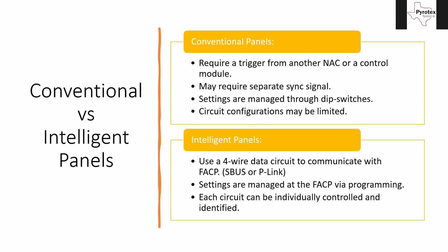Each circuit can be set up to be auxiliary power, a NAC circuit, or door holders, and you can put descriptions on them. So in a building with a bunch of tenant lease spaces, you can label a NAC circuit 'Suite 100' or 'IHOP suite' or whatever — so that if there's a problem on that circuit, it'll come up on the panel and tell the service tech, 'Hey, the IHOP NAC circuit has a trouble.'